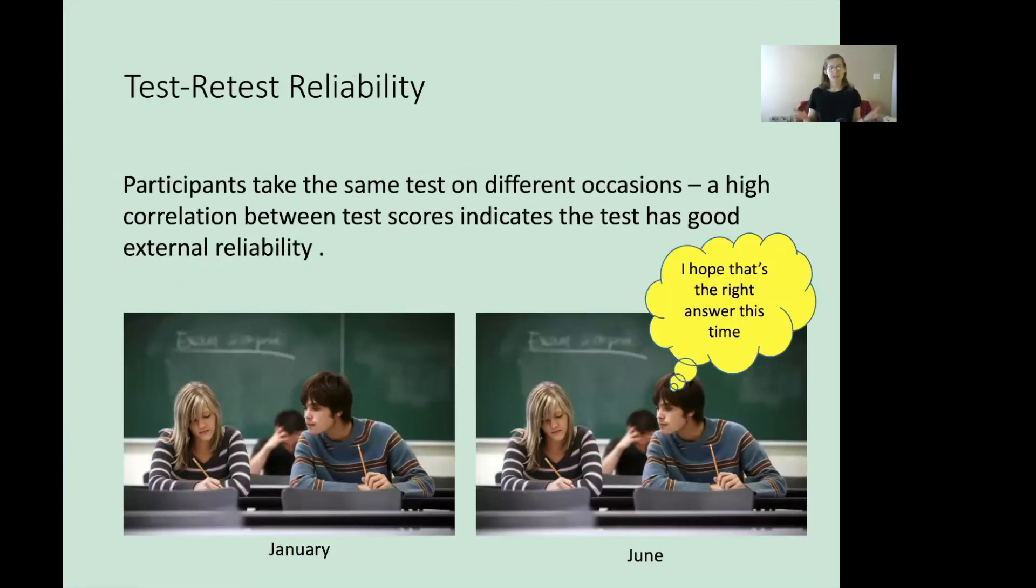Let's look at an example of test-retest reliability. Let's think about high school seniors taking the SAT or the standardized tests for college admissions that y'all have in Texas or even the ACT, any of those college admissions tests. Students would take the same test on different occasions, maybe to see if they could get a higher score later. And a high correlation between their test scores indicates that the test has good external reliability. If they take the test under different conditions and at different times and they get very close to the same score, we say we have good test-retest reliability.